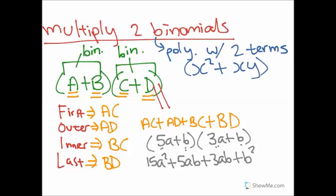And then, we can combine like terms. And so, our final product is equal to 15a squared plus 8ab plus b squared.